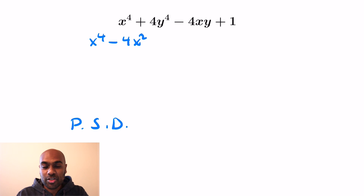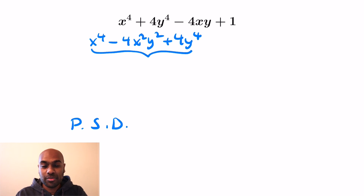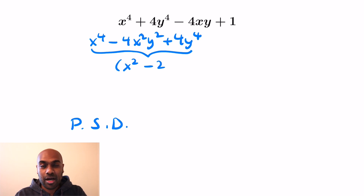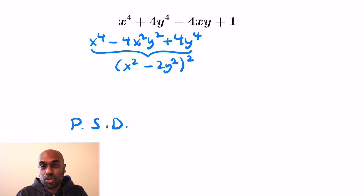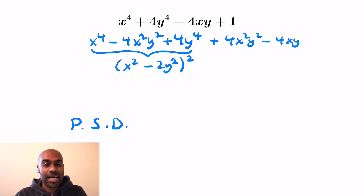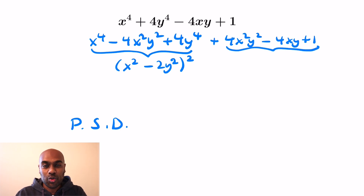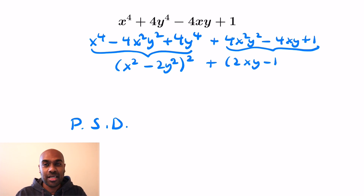To see that, we could have subtracted 4x squared y squared, and then the first two terms together with this new addition gives us a perfect square — it's the square of x squared minus 2y squared. But we can't just subtract 4x squared y squared without balancing it with adding 4x squared y squared. And together with the last two terms, this gives us another perfect square, which is the quantity 2xy minus 1, all squared. So this is a sum of squares.